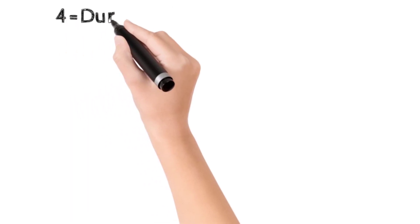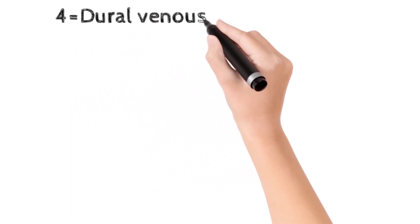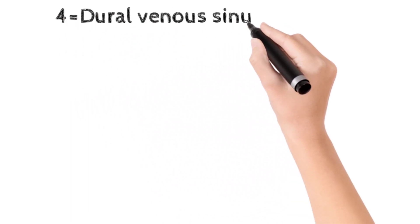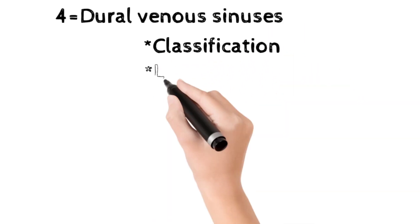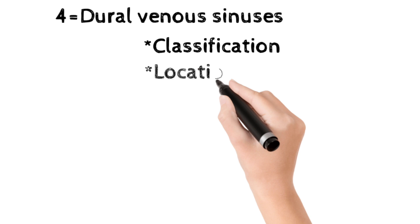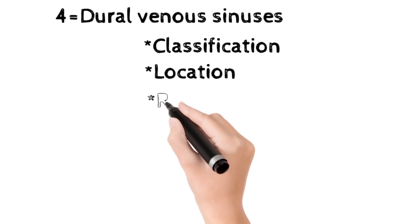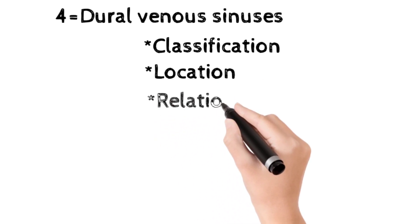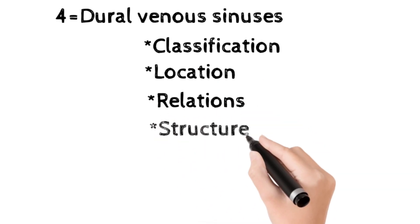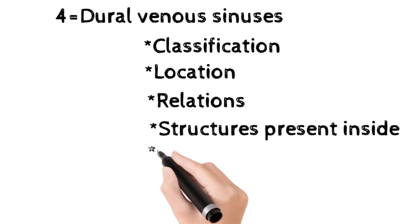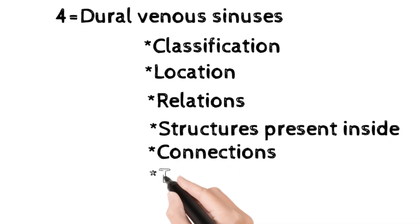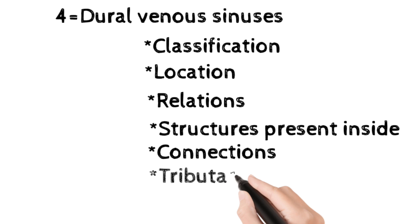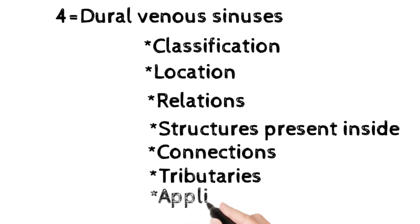The fourth topic is dural venous sinuses. The subheadings are: classification of dural venous sinuses, location, relations, structures present inside, connections, tributaries, and the applied aspect.